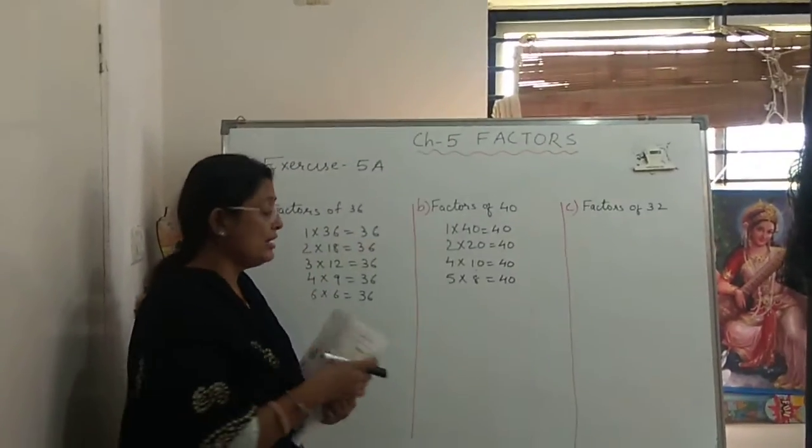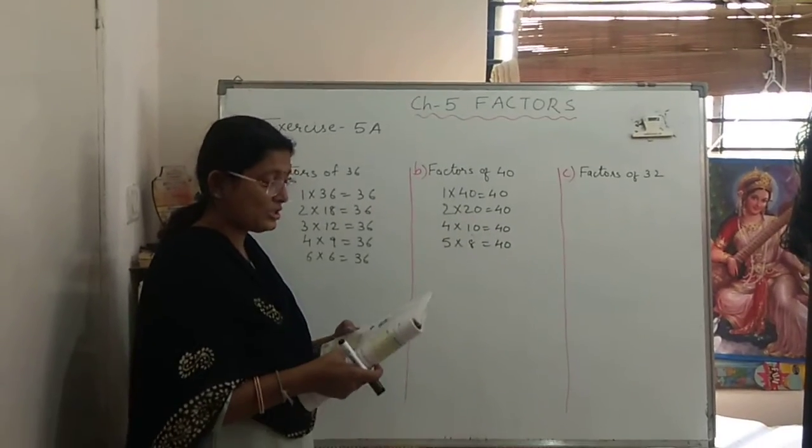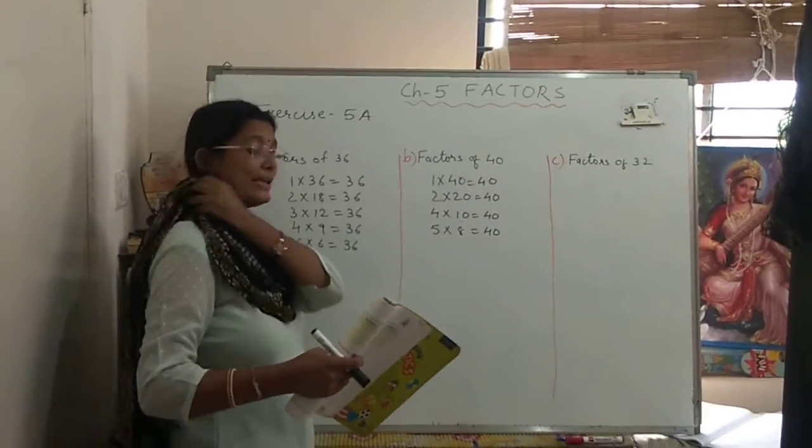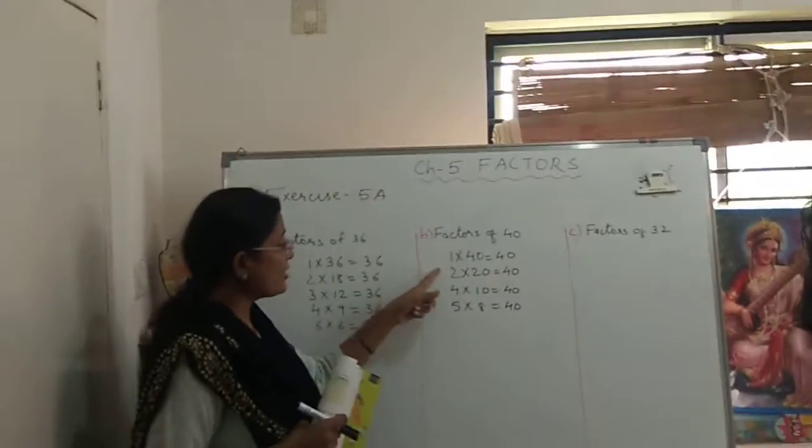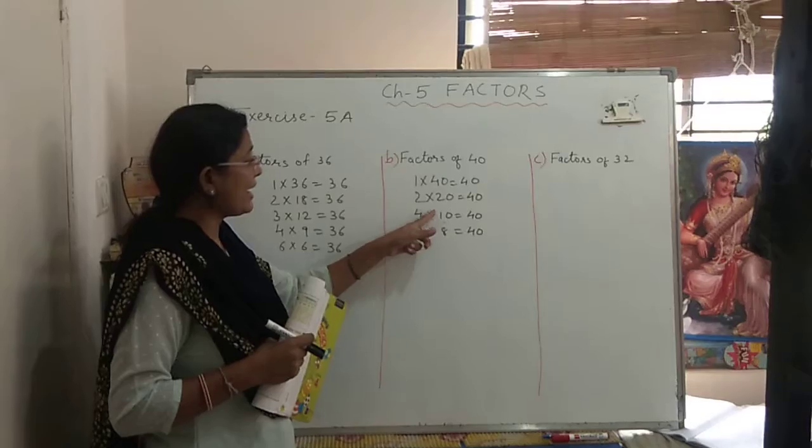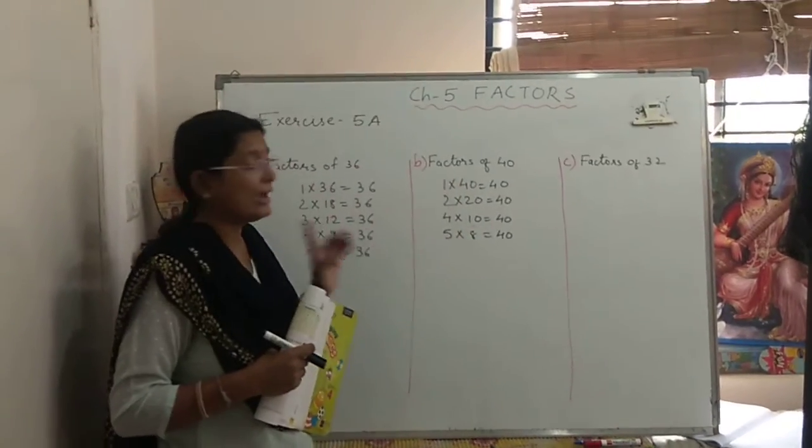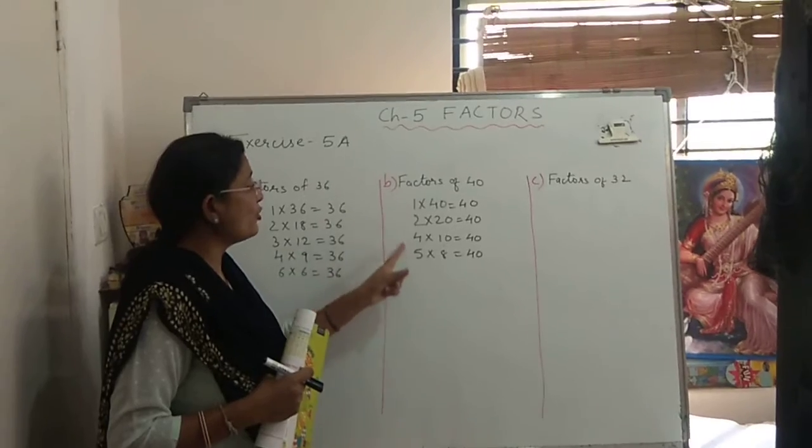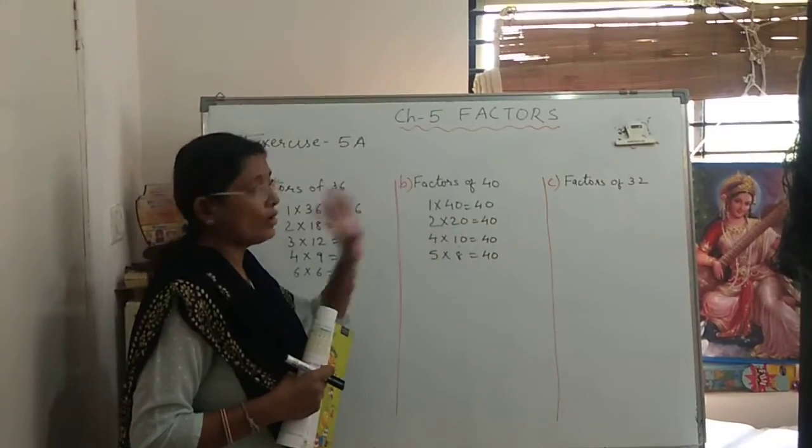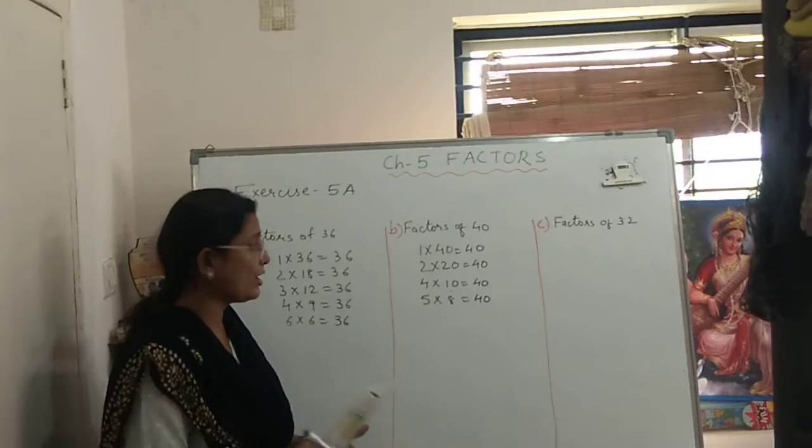So what answer will we write? Again, here they have asked you the question about how many different numbers of rows he can make. So you can write PT teacher can make rows of 1, 2, 4, 5, 8, 10, 20, 40. I repeat, PT teacher can make rows of 1, 2, 4, 5, 8, 10, 20 and 40. This is the way you have to write the answer in straight line.